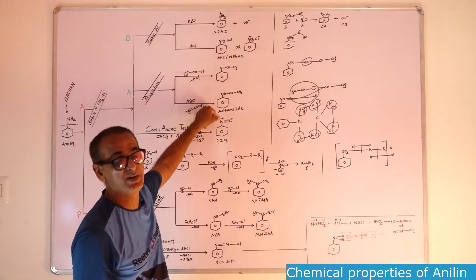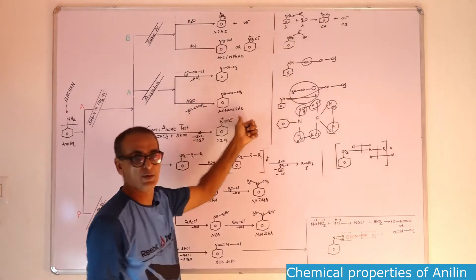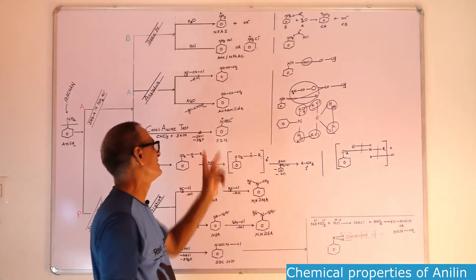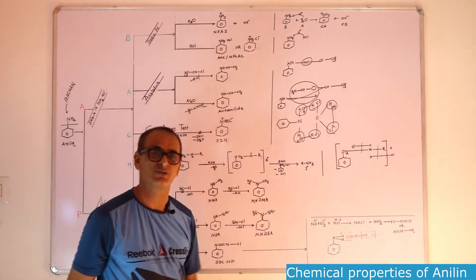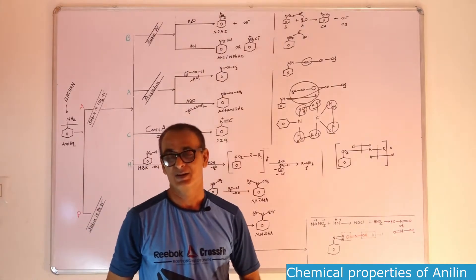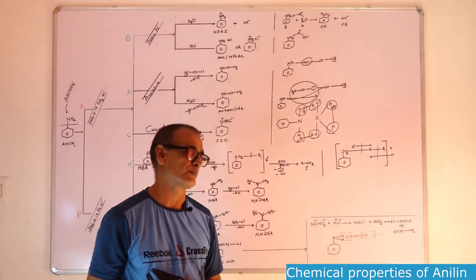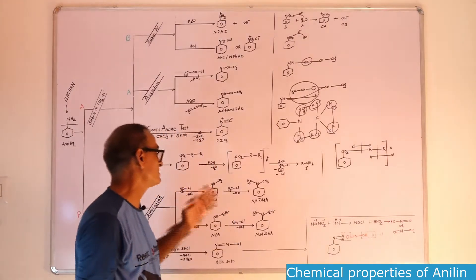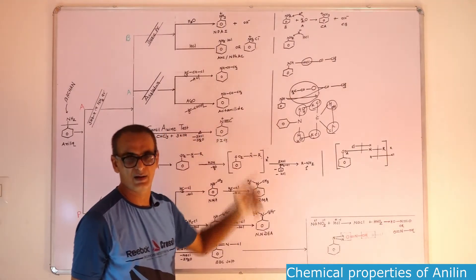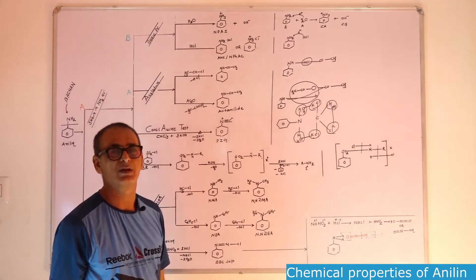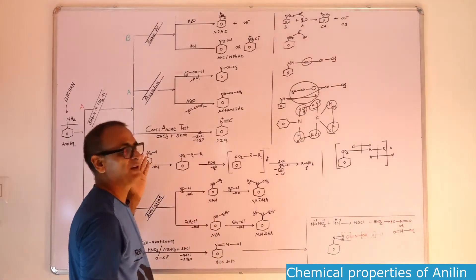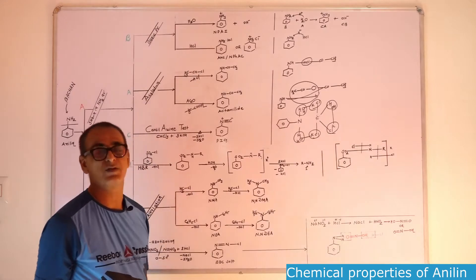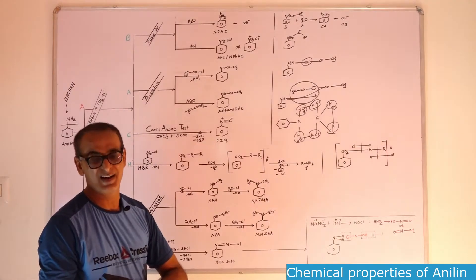When there is a triple bond between nitrogen and carbon atom, at that time plus charge is to be indicated on nitrogen and carbon carries minus charge. And this group is known as isocyanide group. And this compound is also known as carbylamine compound. That means the reaction during which carbylamine compounds are formed, this reaction is known as carbylamine test.